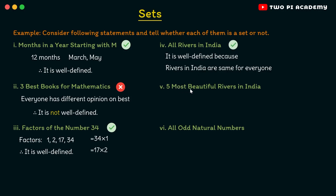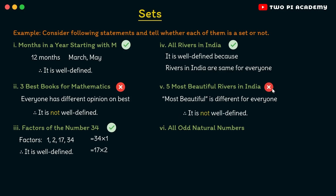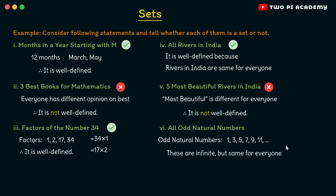Now consider: 5 most beautiful rivers in India. At first glance it seems like the same question as the previous one, but here the keyword is '5 most beautiful.' Most beautiful will be different for everyone — each person will name different rivers as the most beautiful. Therefore, it is not well-defined and hence cannot be called a set. Finally, all odd natural numbers: 1, 3, 5, 7, 9, 11 and so on until infinity. These are infinite but the same for everyone — no matter who you ask, they will name the same numbers. Therefore, it is well-defined and it is a set.